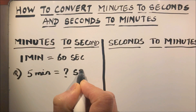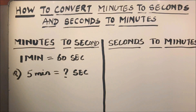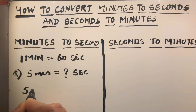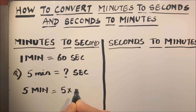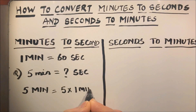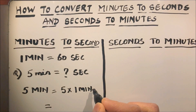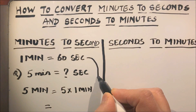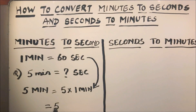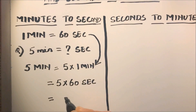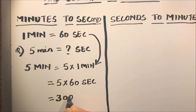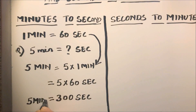If we have a question to convert five minutes to seconds — how many seconds is five minutes — we'll start by writing: five minutes is equal to five times one minute. In place of one minute, we write 60 seconds. So five times 60 seconds gives us 300 seconds.